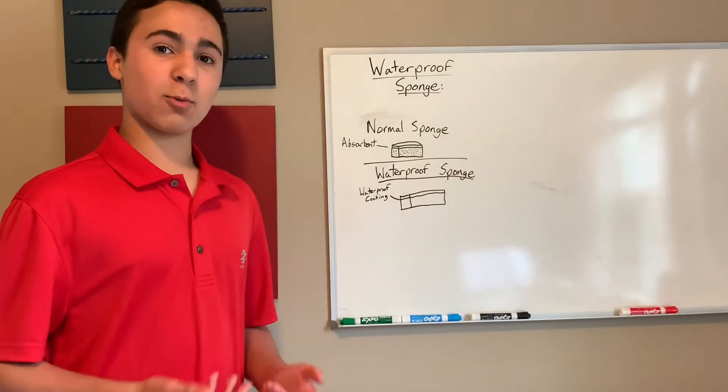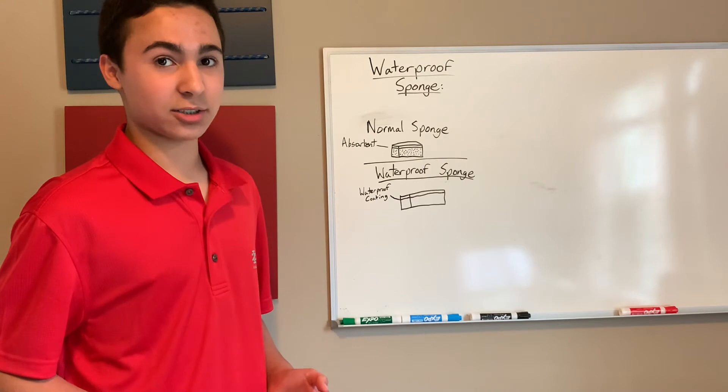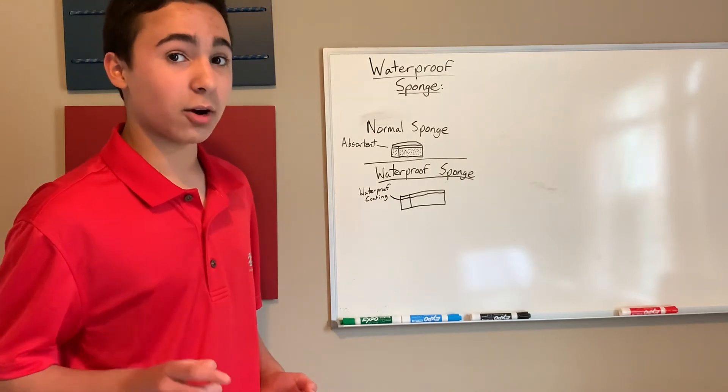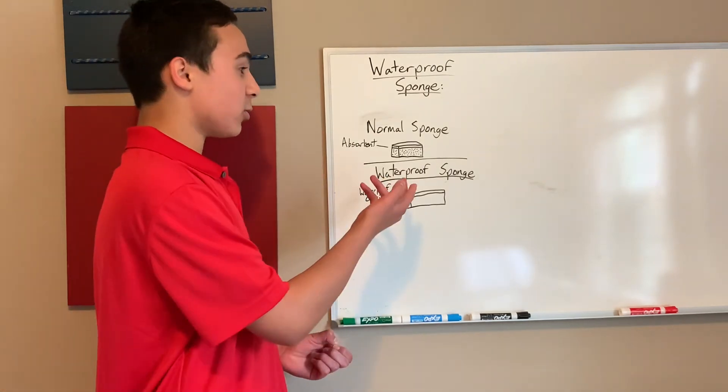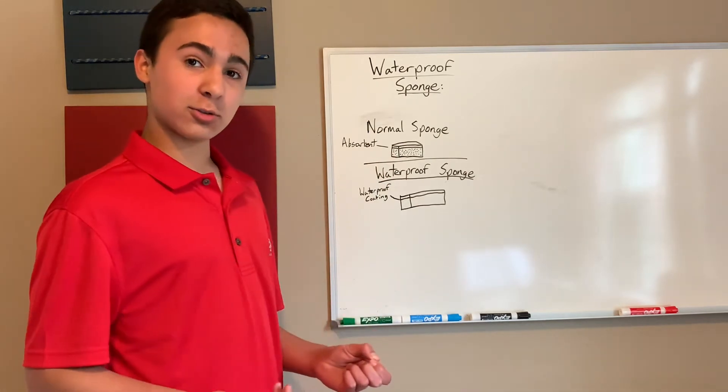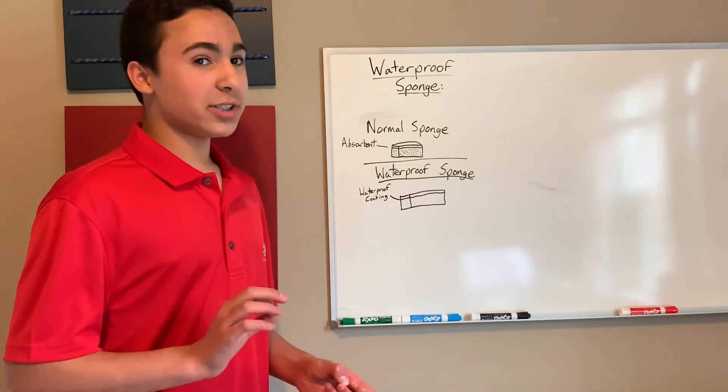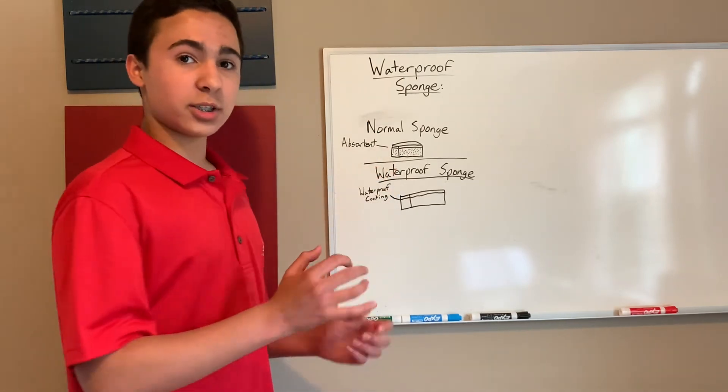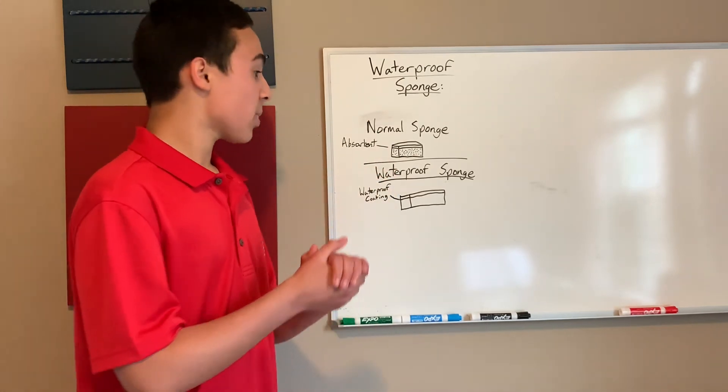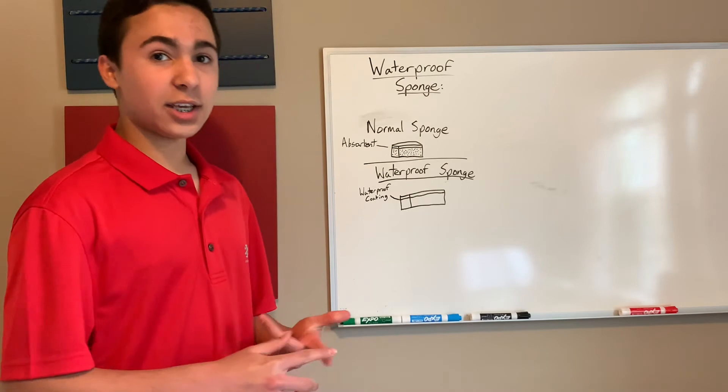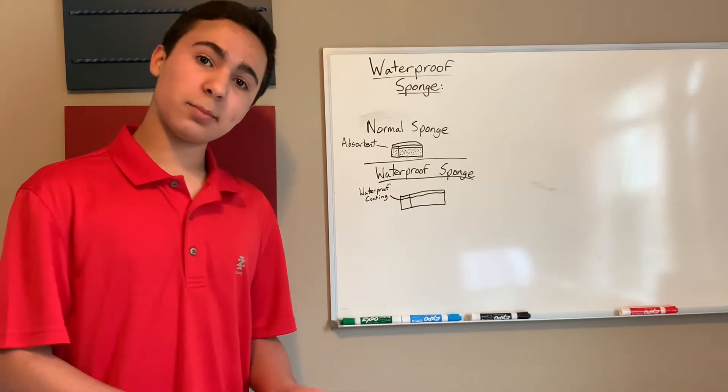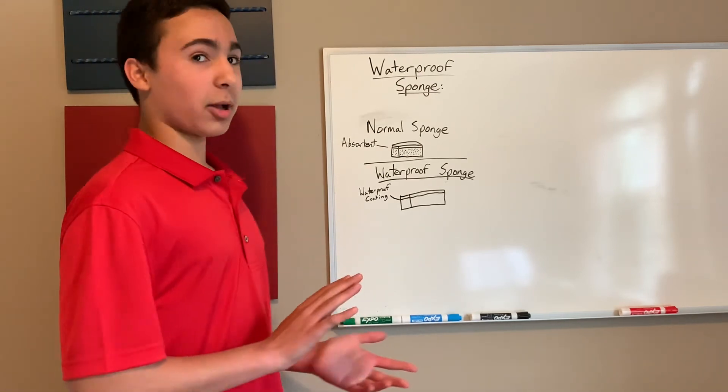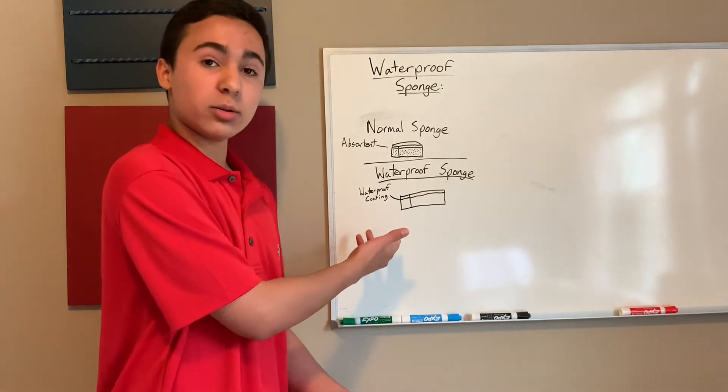Our next product is the waterproof sponge. It's still in testing, so it won't be in stores for a little bit, but I'll give you a sneak peek. So here's a normal sponge. It's all absorbent and has all those holes in it, but the reason why you want to get waterproof sponge is this. The normal sponge keeps in water and soaks it up and it can grow mold. It can get all dirty and you'll have to throw it down and buy a new one.